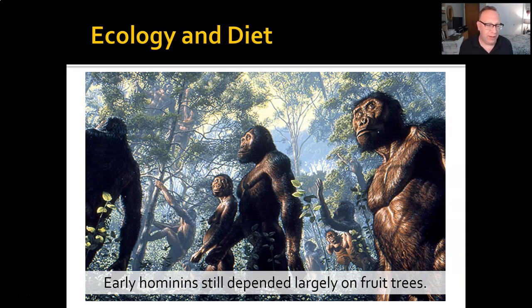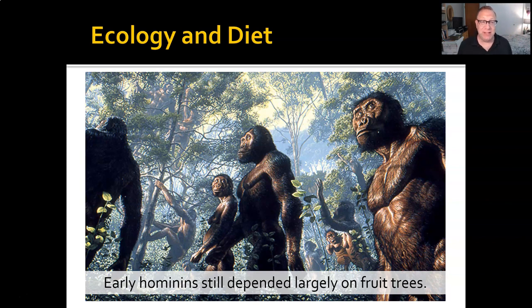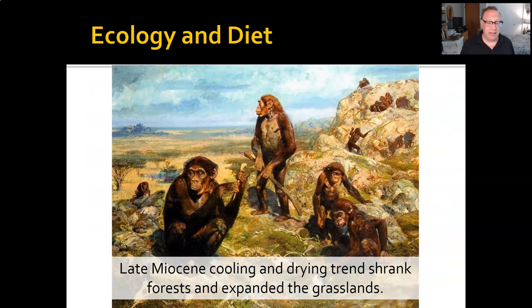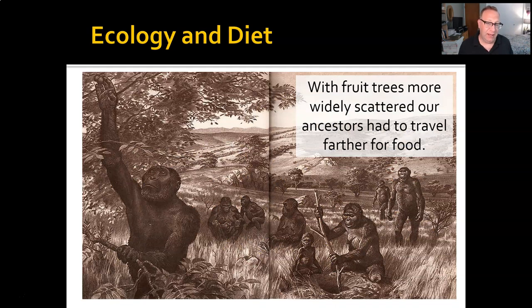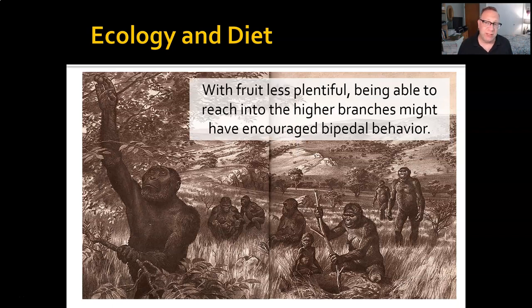For the ecology and diet theory: early hominins still depended largely on fruit trees — they were largely frugivorous. As the late Miocene cooling trend continued, forests shrank and grasslands expanded. As fruit trees became more scattered, ancestors trying to get fruit had to travel farther. With fruit less plentiful, being able to reach into higher branches by standing up, or even climbing into a tree to stand up, may have created a condition where being more fit for bipedal locomotion was an advantage.